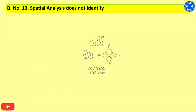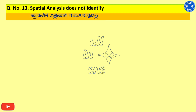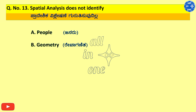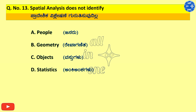Question number 13. Spatial analysis does not identify dash. Options: A. People, B. Geometry, C. Objects, D. Statistics. Right answer is D. Statistics.